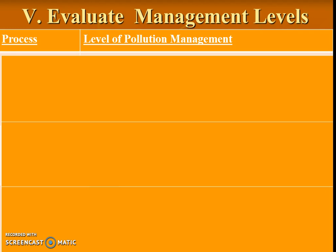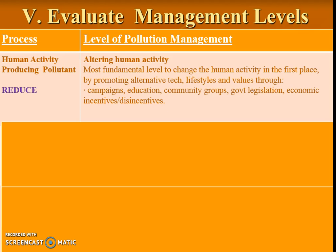When we talk about how we manage pollutants throughout the year, there are pros and cons to managing at different levels. We're going to draw a big chart in our notes. Our first category is the reduction level, where we try to reduce or change the human activity initially producing the pollutant. We can alter the activity through lifestyle change, alternate technology, changing our values — campaigns in schools, education like taking IB environmental class, community groups, and financial incentives like tax breaks. This is the best option because the pollutant is not even entering the environment in the first place.